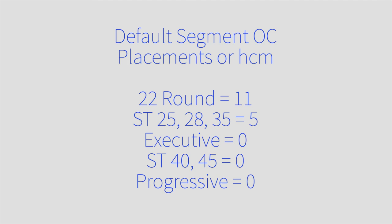For any of you that are forced to work some of these questions, there are some default OC placements, or HCM in the formula. For around 22, you can use 11. For a straight top 25, 28 or 35, you can use a default of 5. For an executive, 0. A flat top 40 or 45, 0. Or if anyone should ever give you a progressive lens question like this, why they would do that, I don't know, that too would be 0.